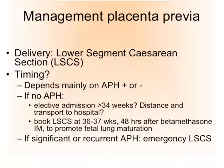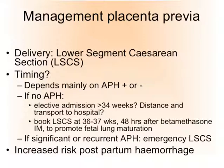If there is significant or recurrent antepartum hemorrhage, the recommendation would be to bring the caesarean section forward and perform an emergency caesarean section. It is also important to note that placenta previa is associated with an increased risk of postpartum hemorrhage because the lower uterine segment contains less myometrium, and myometrial contractility is the primary hemostatic mechanism, as discussed in the video about postpartum hemorrhage.